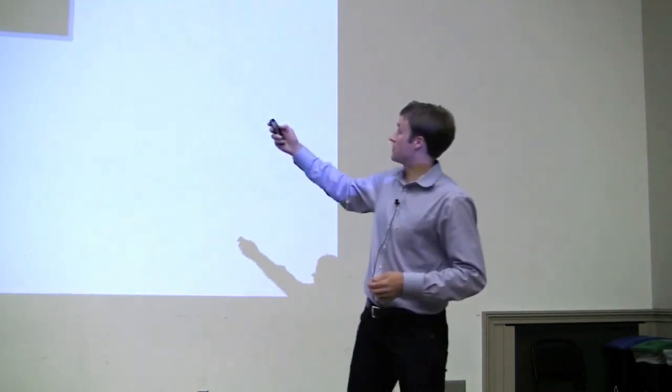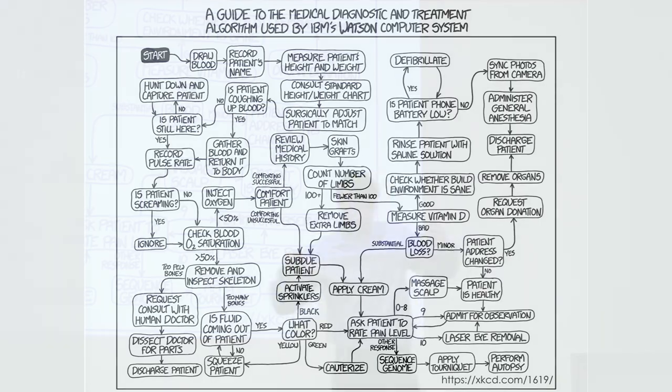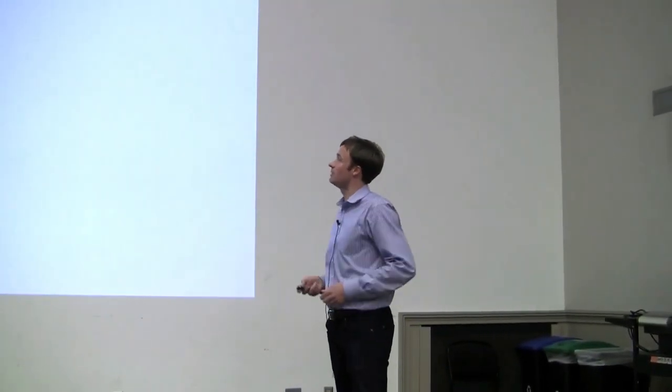Now, the learned algorithm aspect right here sometimes looks like this. In fact, it's a lot more complicated. This was a really nice XKCD comic on making fun of the complexities of these algorithms that are running these kinds of machines. And so here's a guide to medical diagnosis and treatment used by IBM Watson's computer system. So up here, you draw some blood, you record patient's name, you measure height weight, consult the standard height weight chart, you go through all of this. You have weights on all of these different arrows. This is essentially what's going on, much more complicated in some of these deep neural net algorithms. But just know that there is something complicated under there.